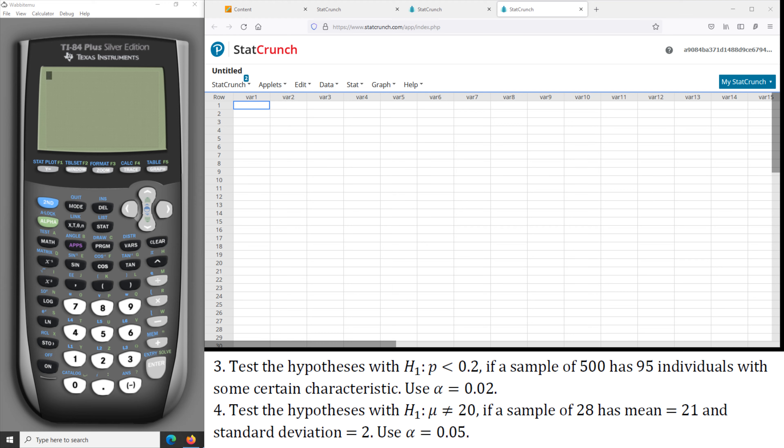Hi everybody, we will use TI-84 calculator and StatCrunch for hypothesis testing. First we have the test of the population proportion is less than 0.2 with the following information.